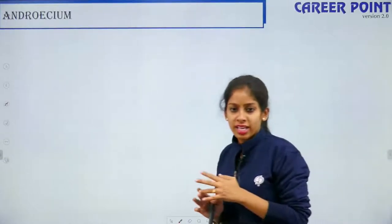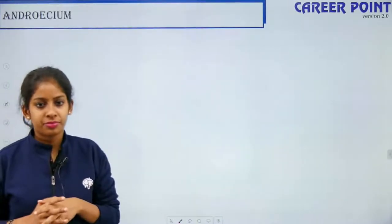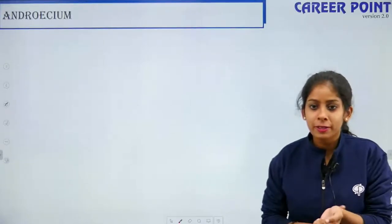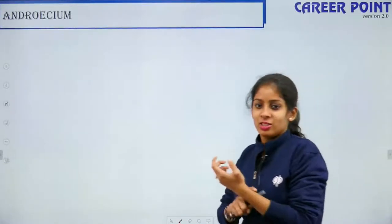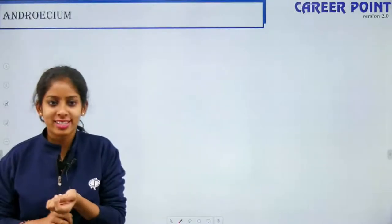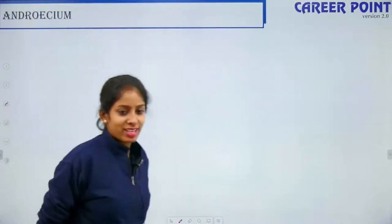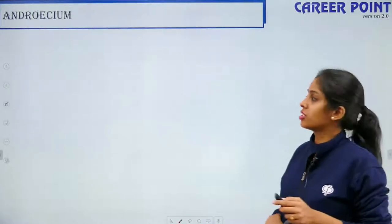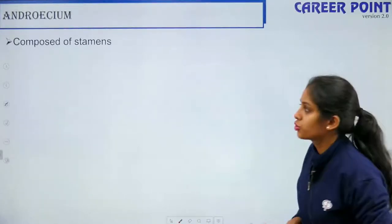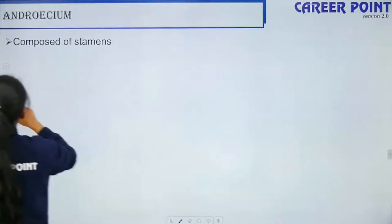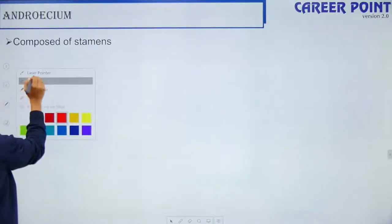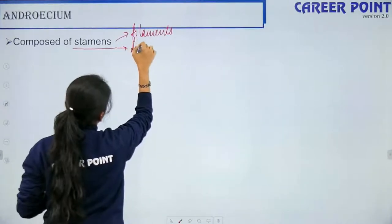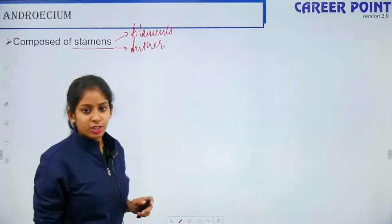Today we will talk about androecium and gynoecium. Androecium is the male reproductive part. Androecium is composed of stamens. Stamens are composed of two parts — filament and anther.